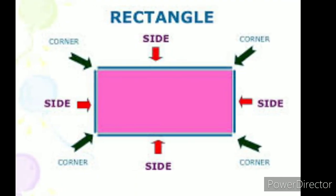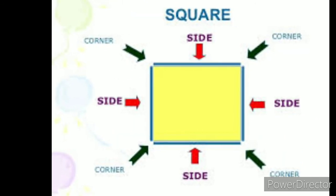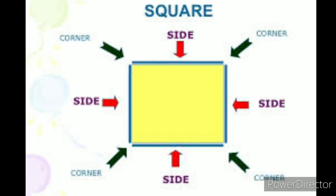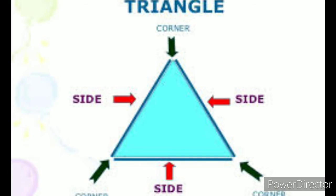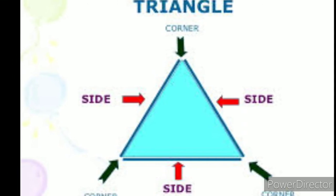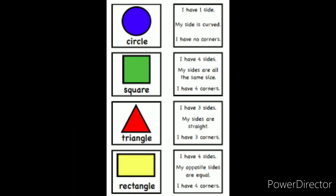Now let's review. A rectangle has four sides and four corners as you can see here. A square also has four equal sides and four corners. In a triangle there are three sides and three corners. A circle is round — it has one curved side and no corners. An oval also has one curved side and no corners. One more thing — another word for corner is vertices. When any two sides meet at a point, it is known as a corner, or we can say vertices.